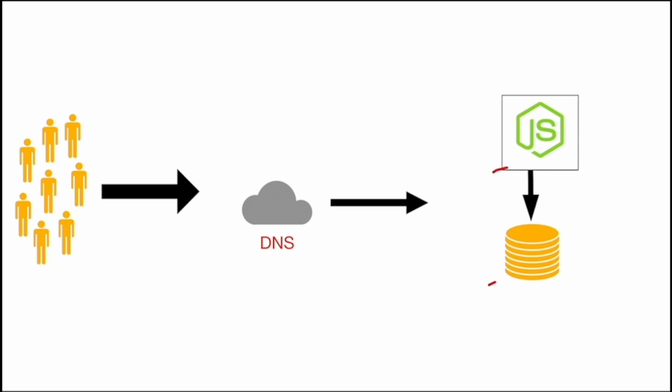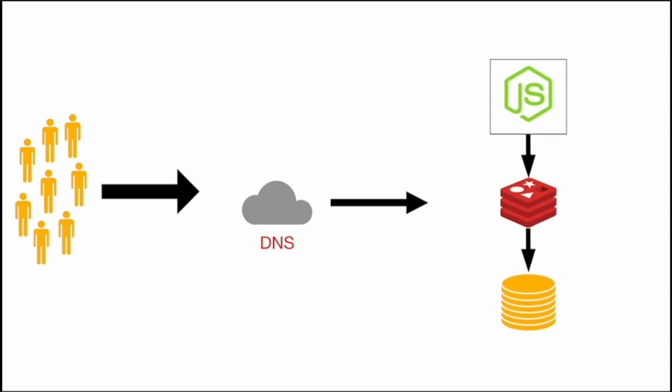After a point, we realize we are doing complex and time-intensive calculations again and again. It makes sense to save the result of these calculations and reuse them for later API calls instead of recalculating each time. This introduces the need for a cache layer. So here we have introduced the cache layer. The system that was hosted on a single node is now a system hosted across three nodes: the application node, the cache node, and the database node.